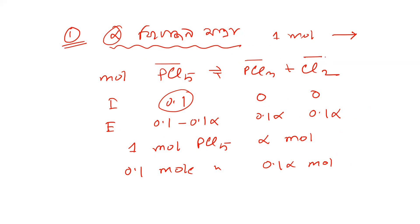So 1 mole is 1 mole. If alpha mole reacts, then alpha mole of PCl3 and alpha mole of Cl2 are formed, leaving 1 minus alpha moles of PCl5, giving 2 alpha moles of products total and 1 mole overall contribution. Okay!